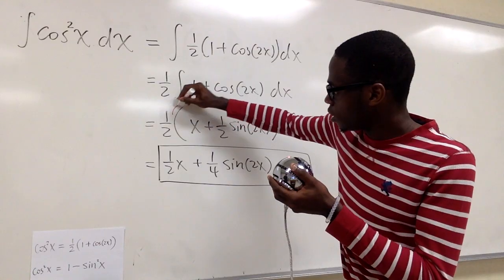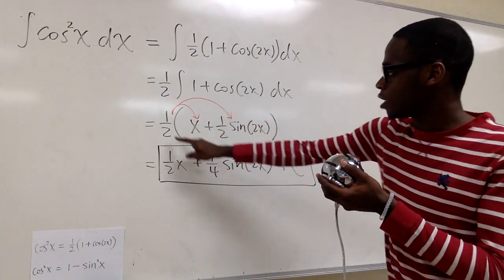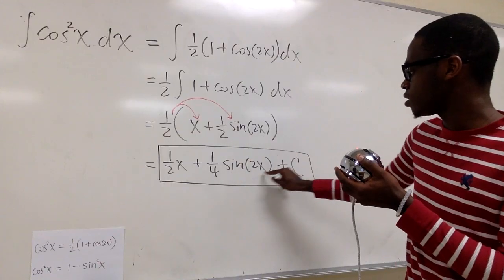And now we're distributing this. That's how we have half x plus half times a half, 1 fourth sine 2x plus c.